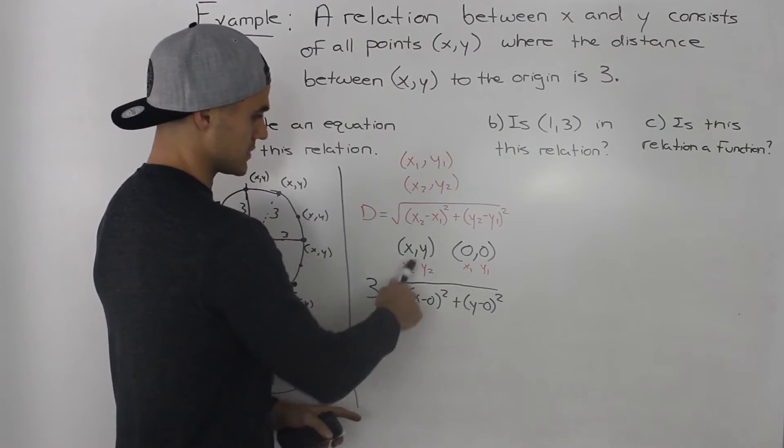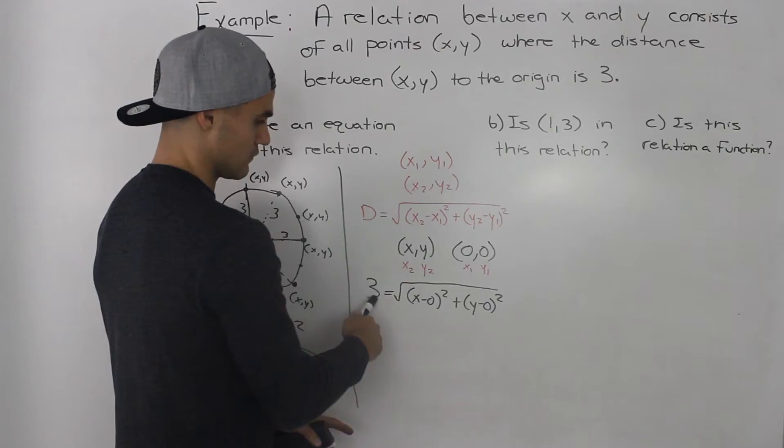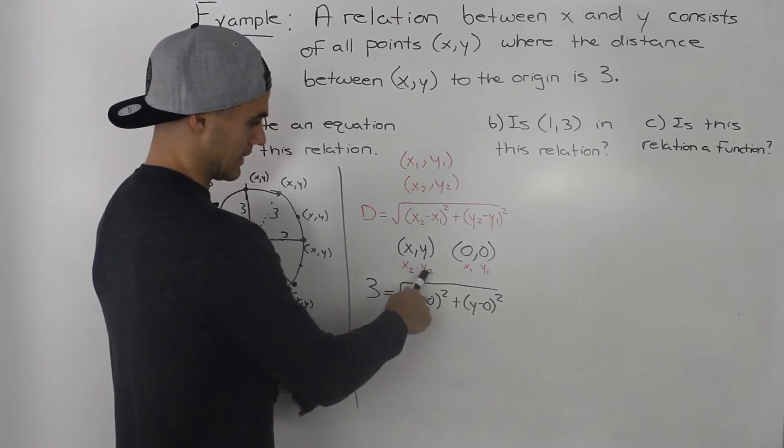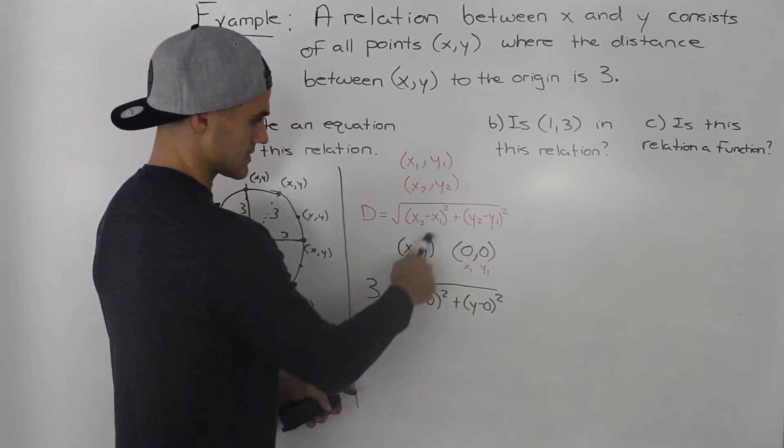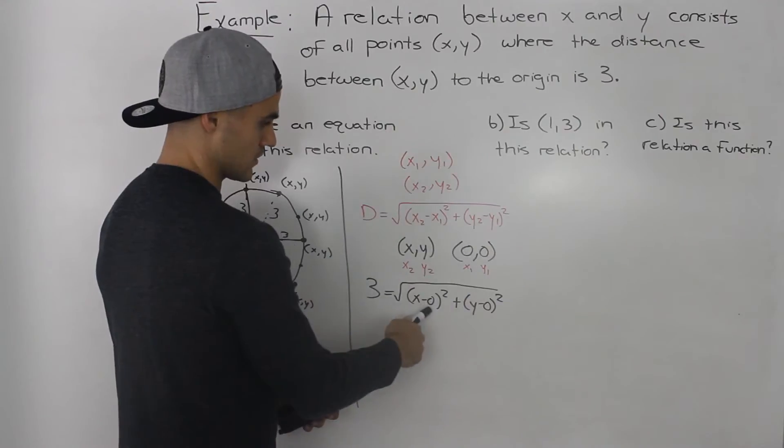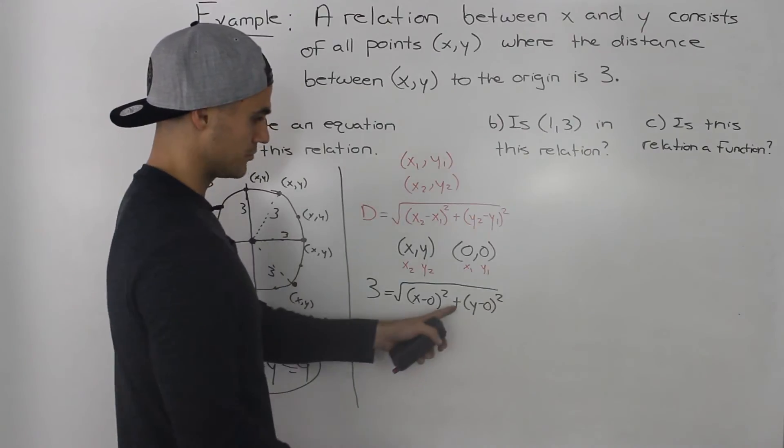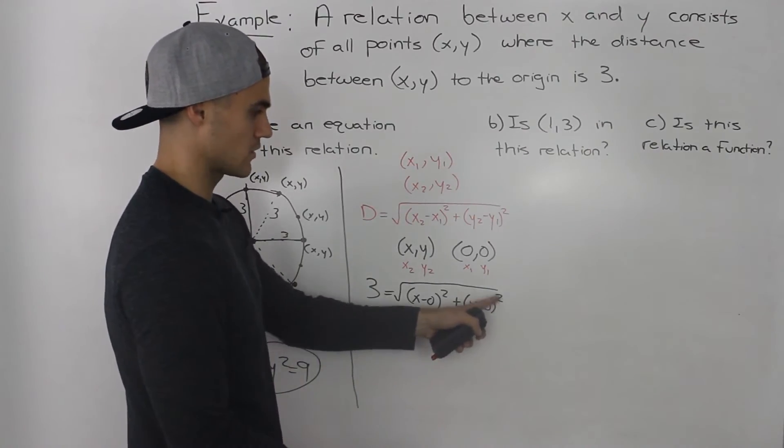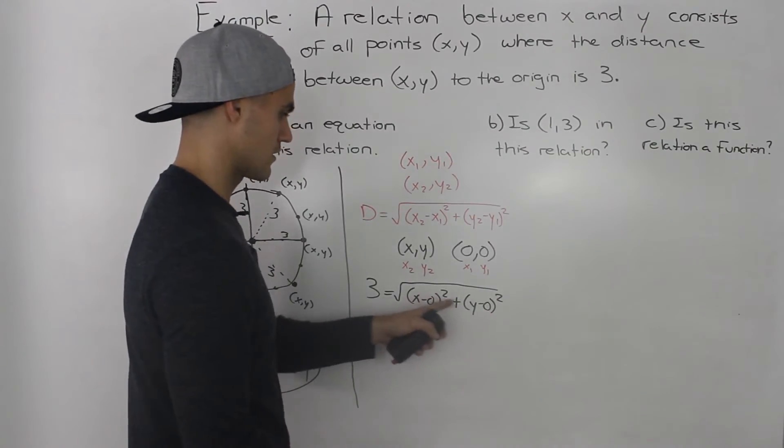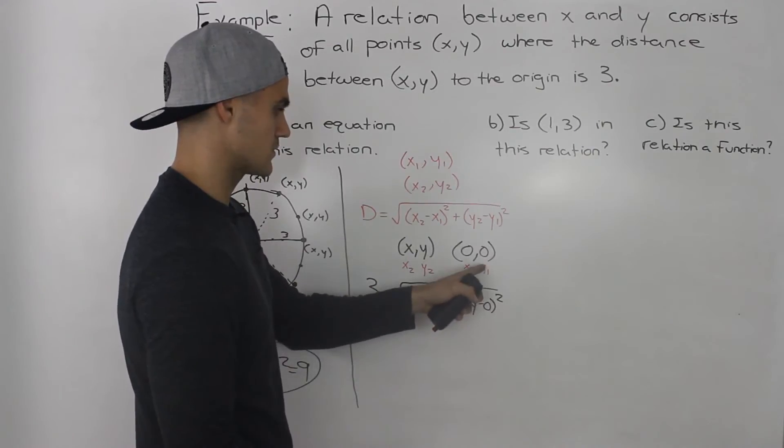And now taking all of our information and subbing it into this formula, the distance between these two points has to be 3. So I put 3 here for d, and then x₂ is x and x₁ is 0. So we got x - 0, right? x₂ - x₁ squared, plus y - 0 squared. Same thing. The y is y₂ and the 0 is y₁.